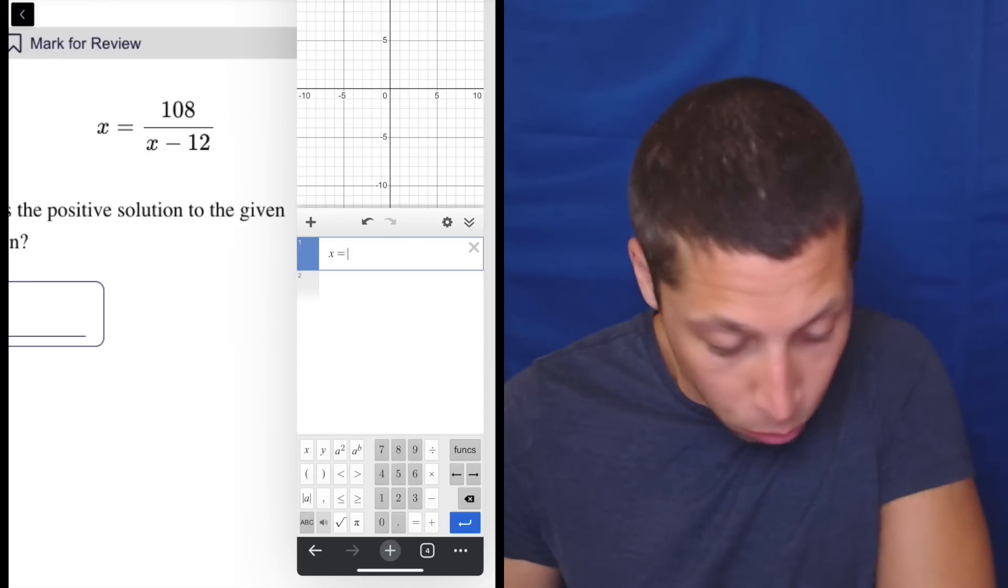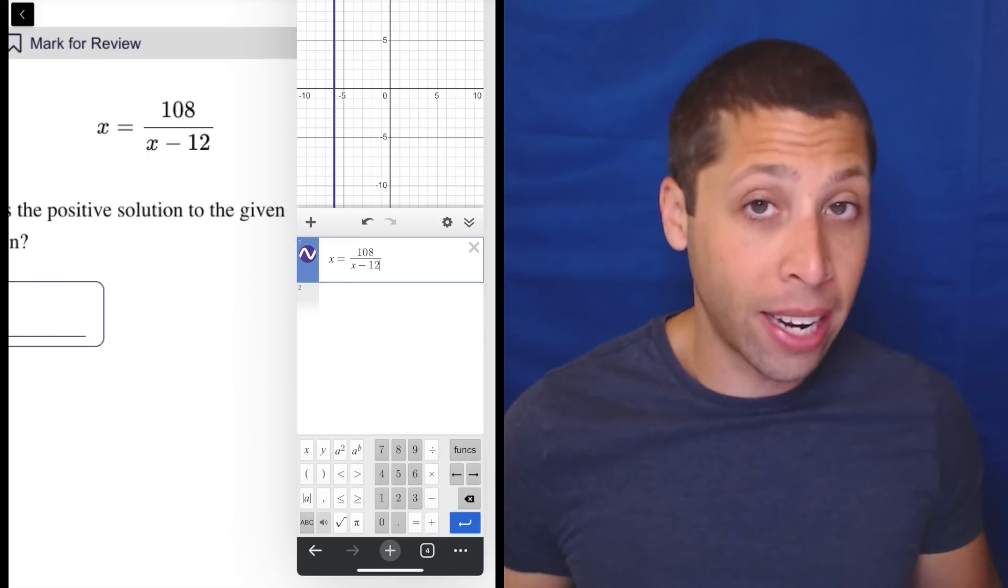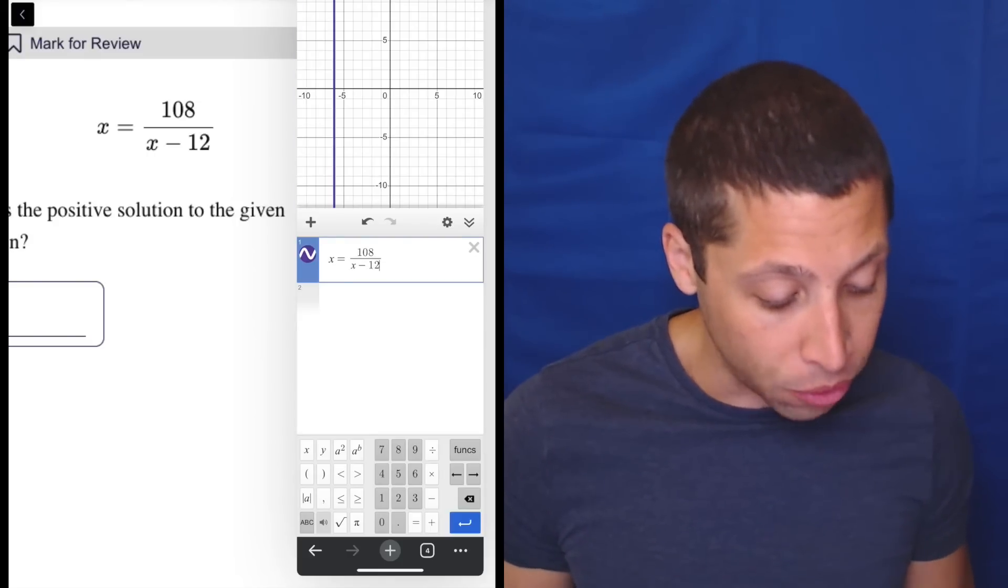We have X equals 108 divided by X minus 12. And we get a solution already at X equals negative six.